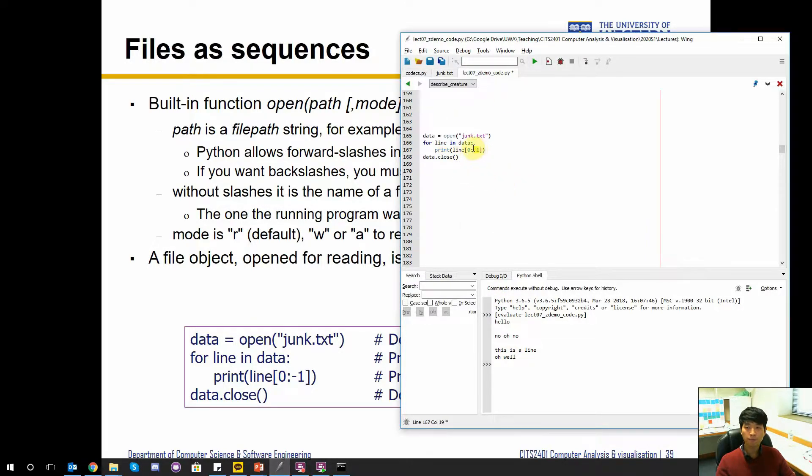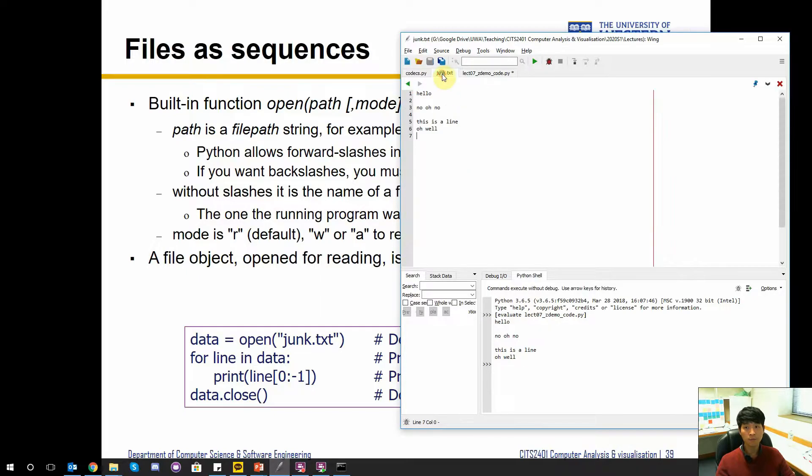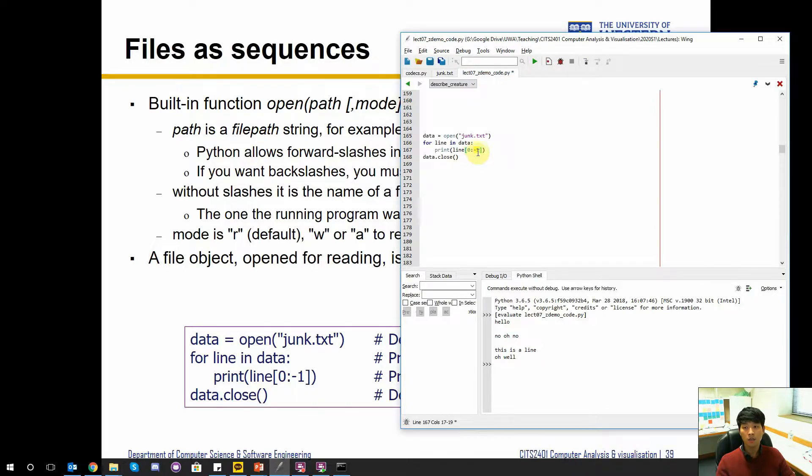One note here is that we have put the range from beginning to the last but not including, because usually in file although you can see it, there is a new line character at the end. Hence you can see the line going to the next.